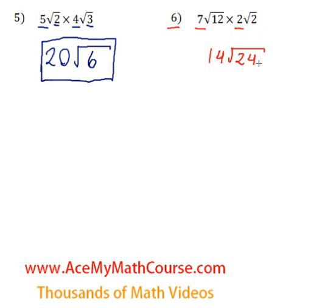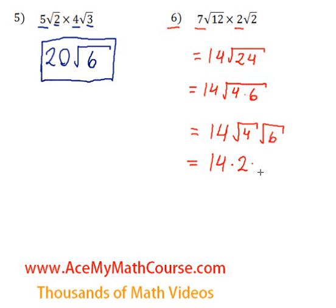Now we can simplify 24 a little bit. There is a factor of 24 that is a perfect square, like 4. 24 divided by 4 is 6. We can split up the square root. The square root of 4 is 2. 14 times 2 is 28. So we get 28 root 6, and that's as far as we can go.